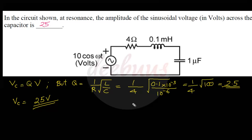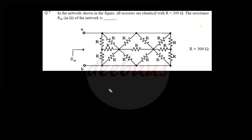The capacitor voltage is 10 × 2.5 = 25 volts, so 25 V is the answer. A similar sort of question for a parallel RLC circuit was asked during a previous GATE paper. Moving to another one-mark question.